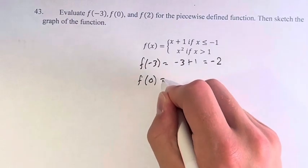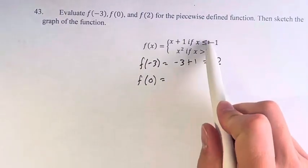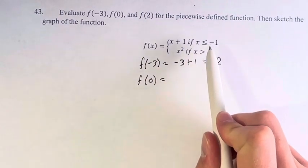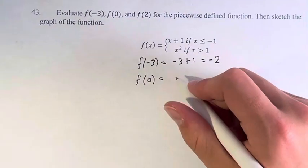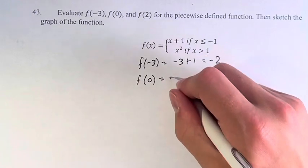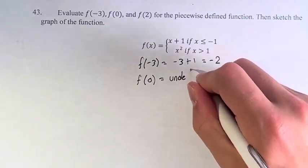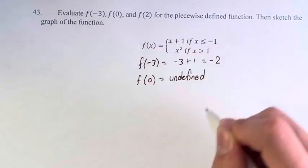f of 0. 0 is not less than or equal to negative 1, and it's not greater than 1. Therefore, the function is not defined on x equals 0. Therefore we can say simply that it is undefined.